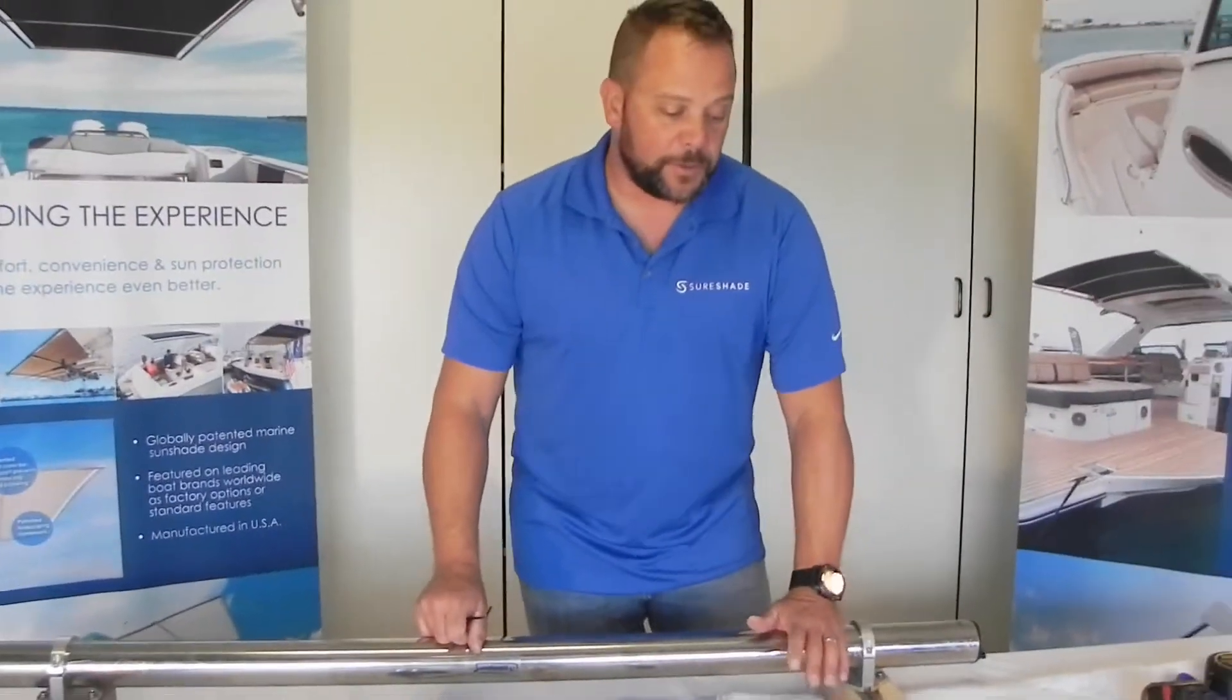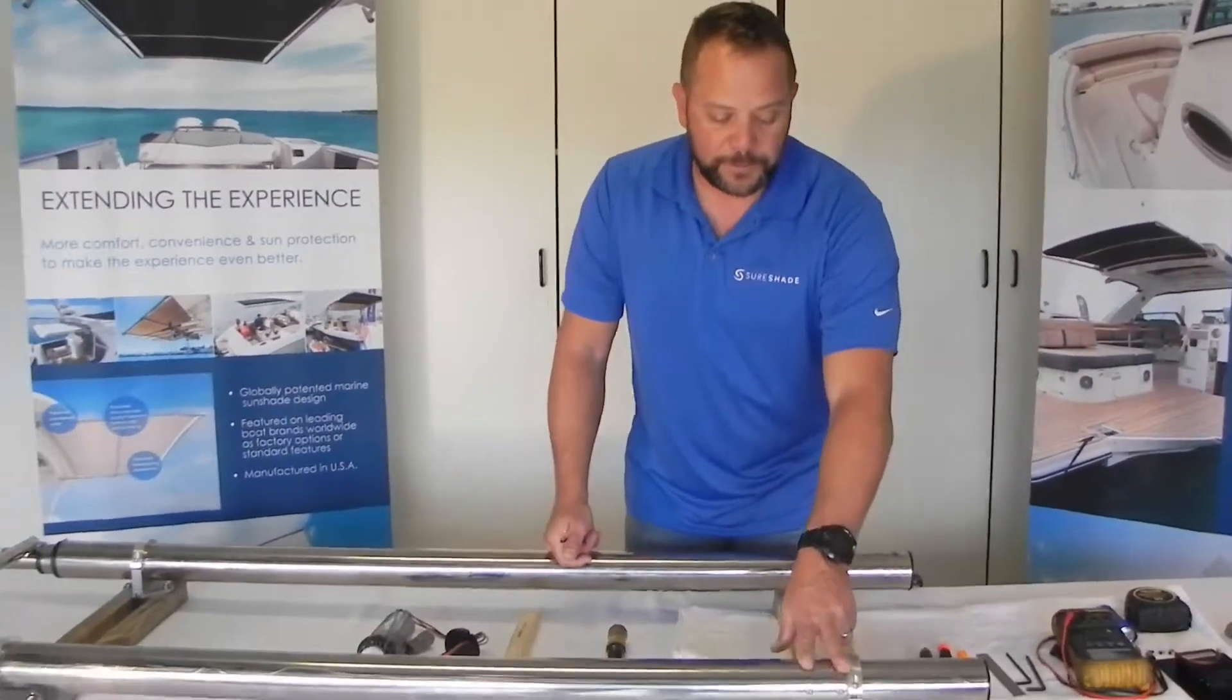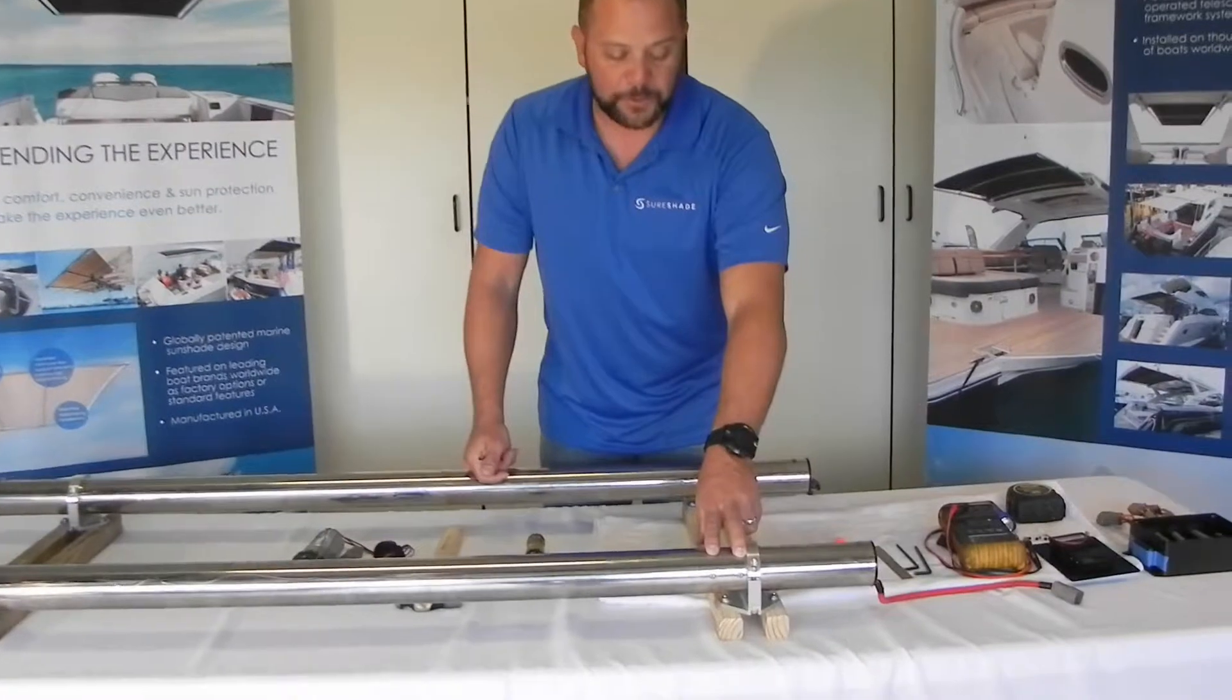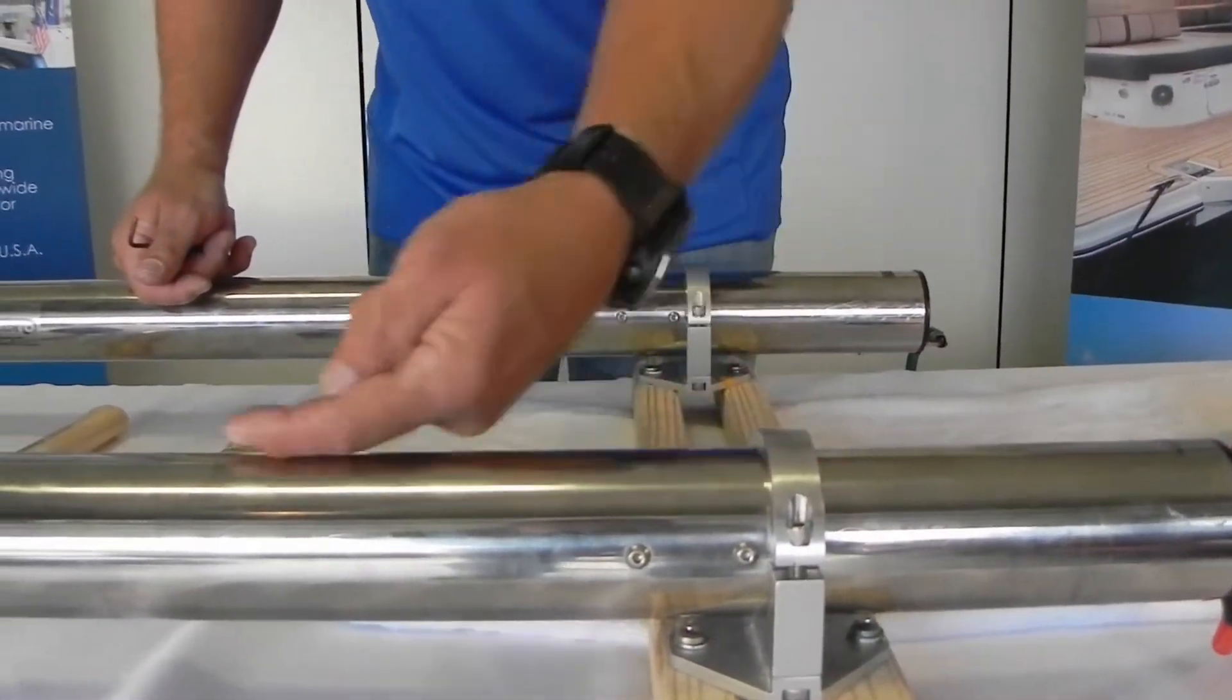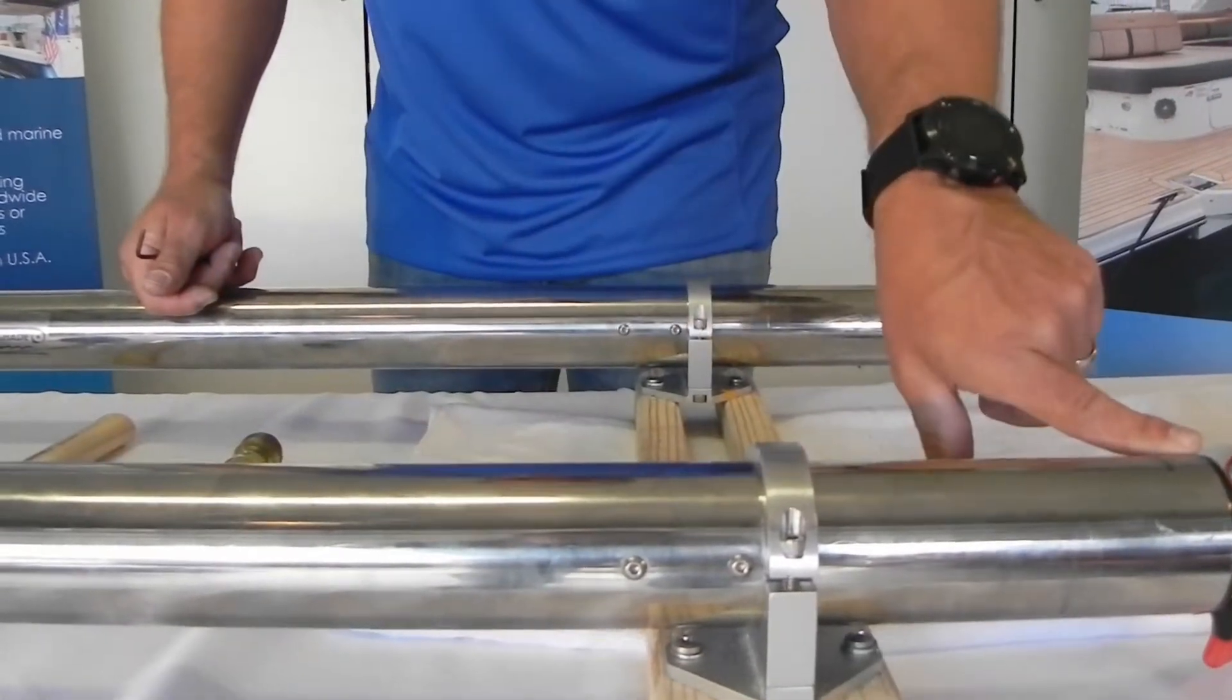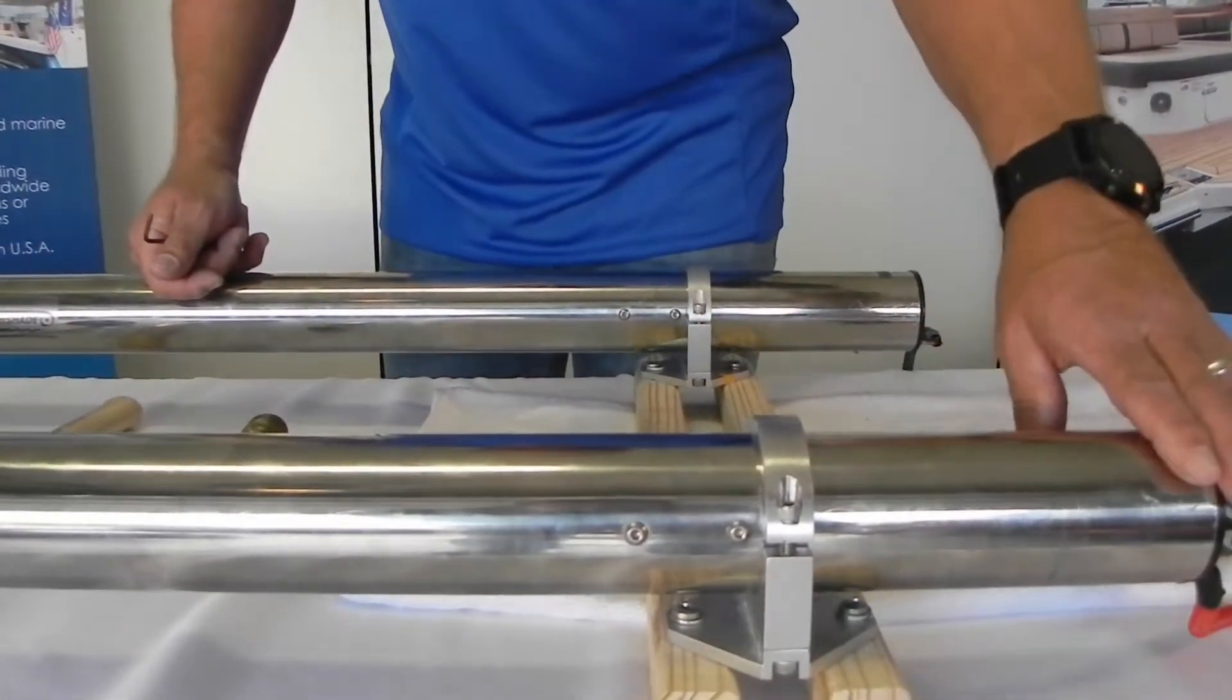Now here, what we're going to do is I want to clarify, you've got two sets of Allen screws in your actuator tube. We're going to assume this is mounted on a boat, this direction is aft, this direction is forward towards your black cap.